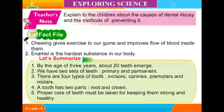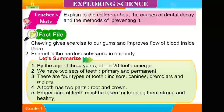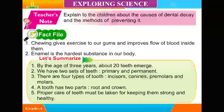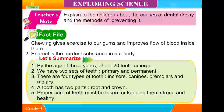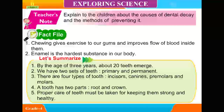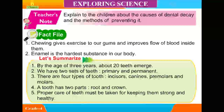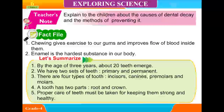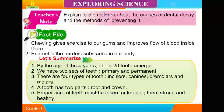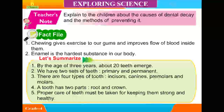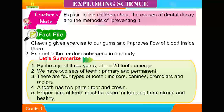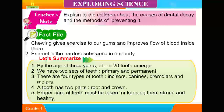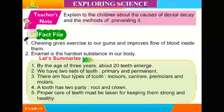Let's summarize. By the age of 3 years, about 20 teeth emerge. We have 2 sets of teeth: primary and permanent. There are 4 types of teeth: incisors, canines, premolars, and molars. A tooth has 2 parts: root and crown. Proper care of teeth must be taken for keeping them strong and healthy.